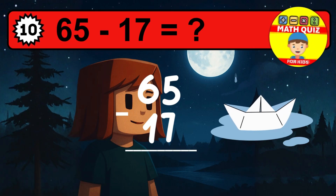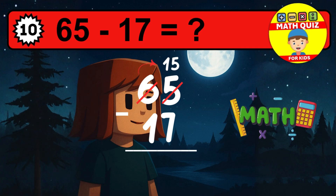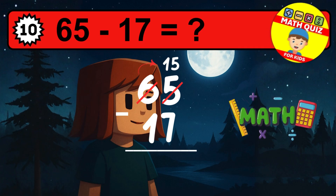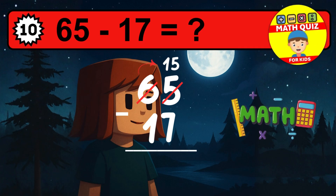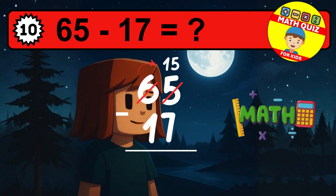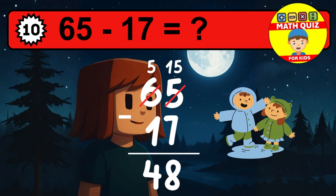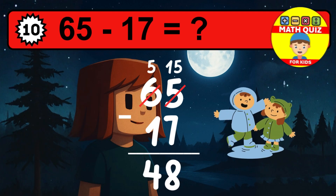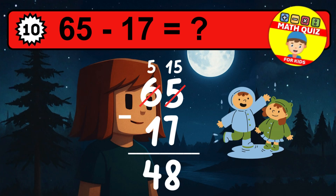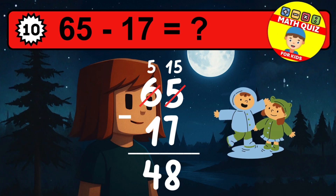Let's solve this step by step. We start with the units. Five minus seven is not possible, so we need to regroup. We take one ten from the tens column. Now we have five tens, and the units become fifteen. Now we subtract. Fifteen minus seven is eight.